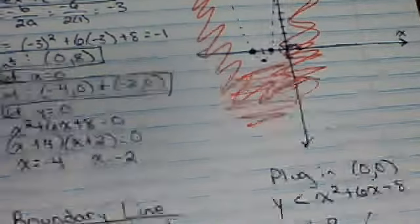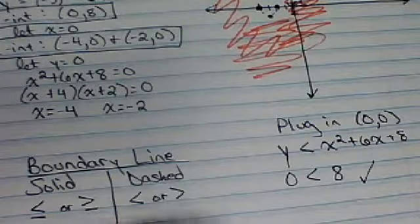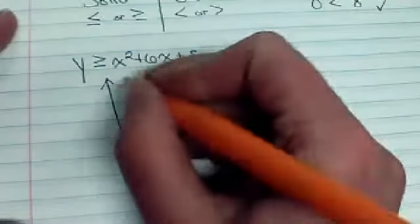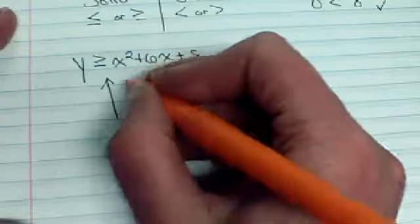Now, what would change if I change that to y is greater than or equal to? Well, one thing that's going to change is that our graph is going to be a solid line. But if we change it to a greater than or equal to, we would shade above the vertex.